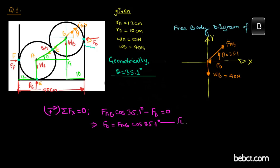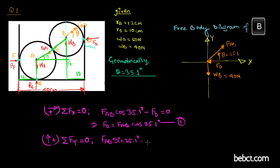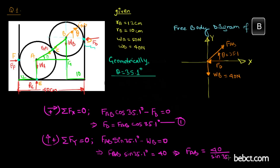Along the Y axis, taking the upward direction as positive, the sum of forces must equal zero for equilibrium. FAB has a component along the Y axis equal to FAB sin 35.1 degrees acting upward, and WB acts downward. Setting the sum to zero: FAB sin 35.1 degrees minus WB equals 0, so FAB sin 35.1 degrees equals 40 Newtons. Solving: FAB equals 40 divided by sin 35.1 degrees, which equals 69.57 Newtons.